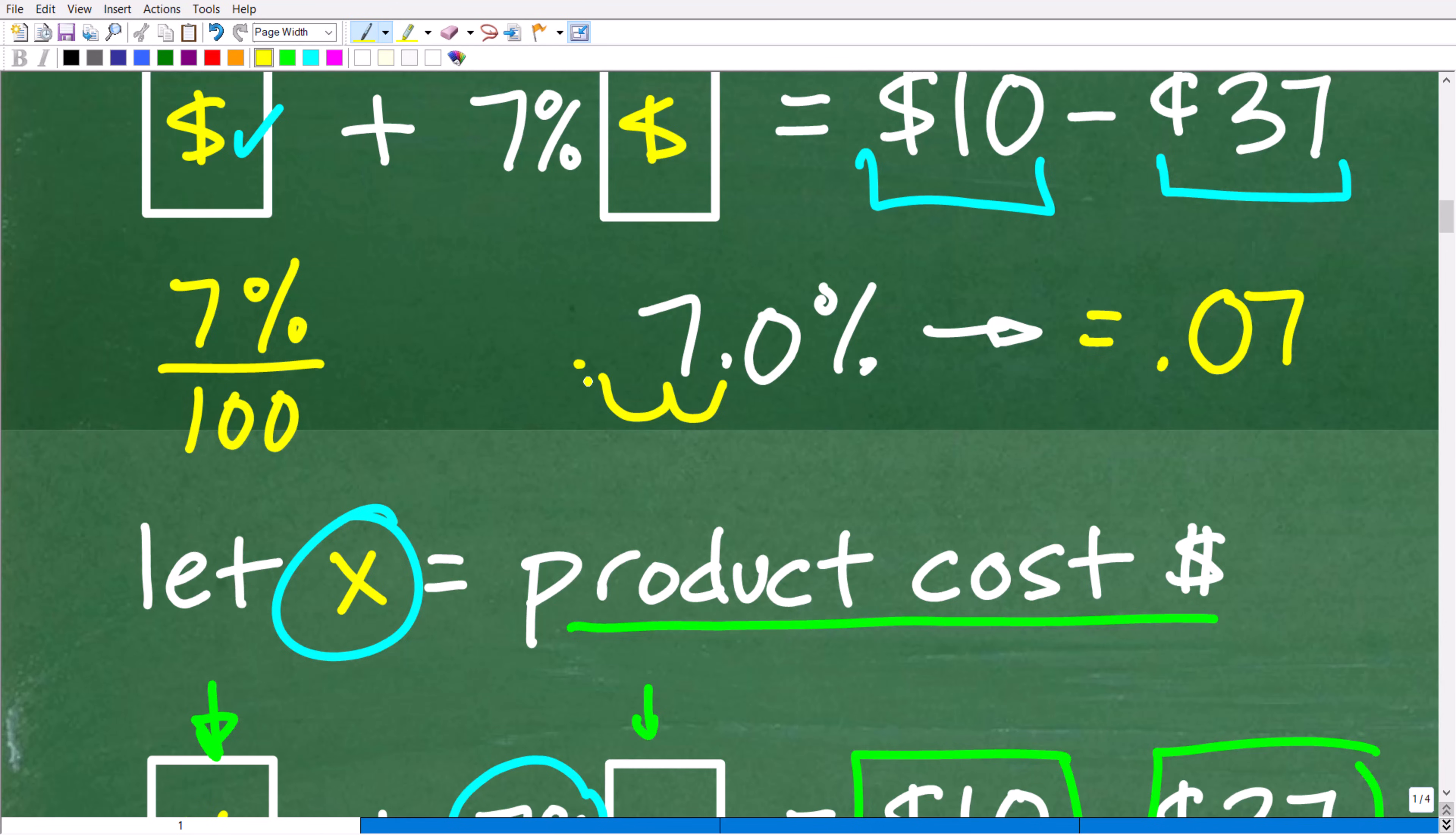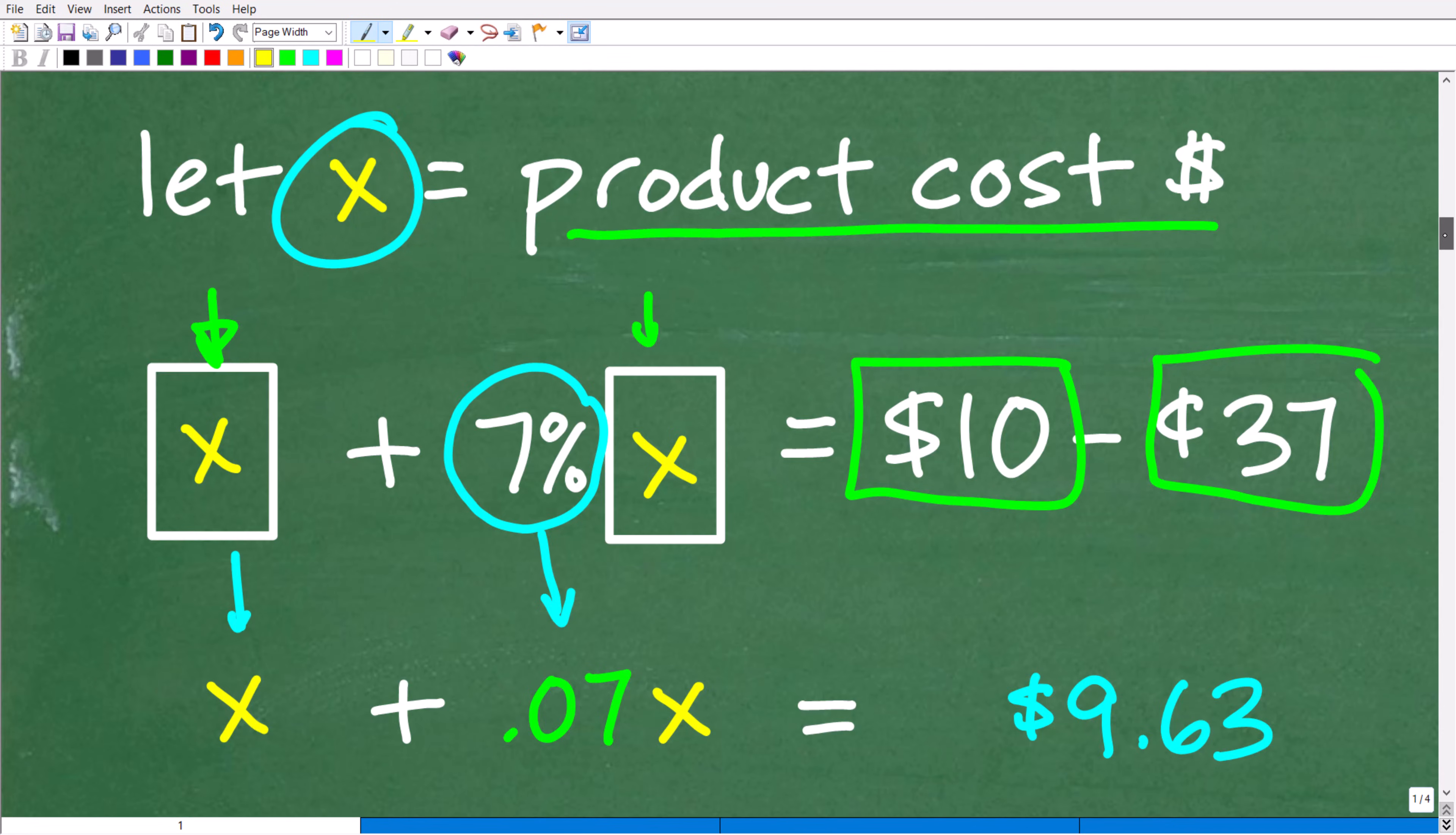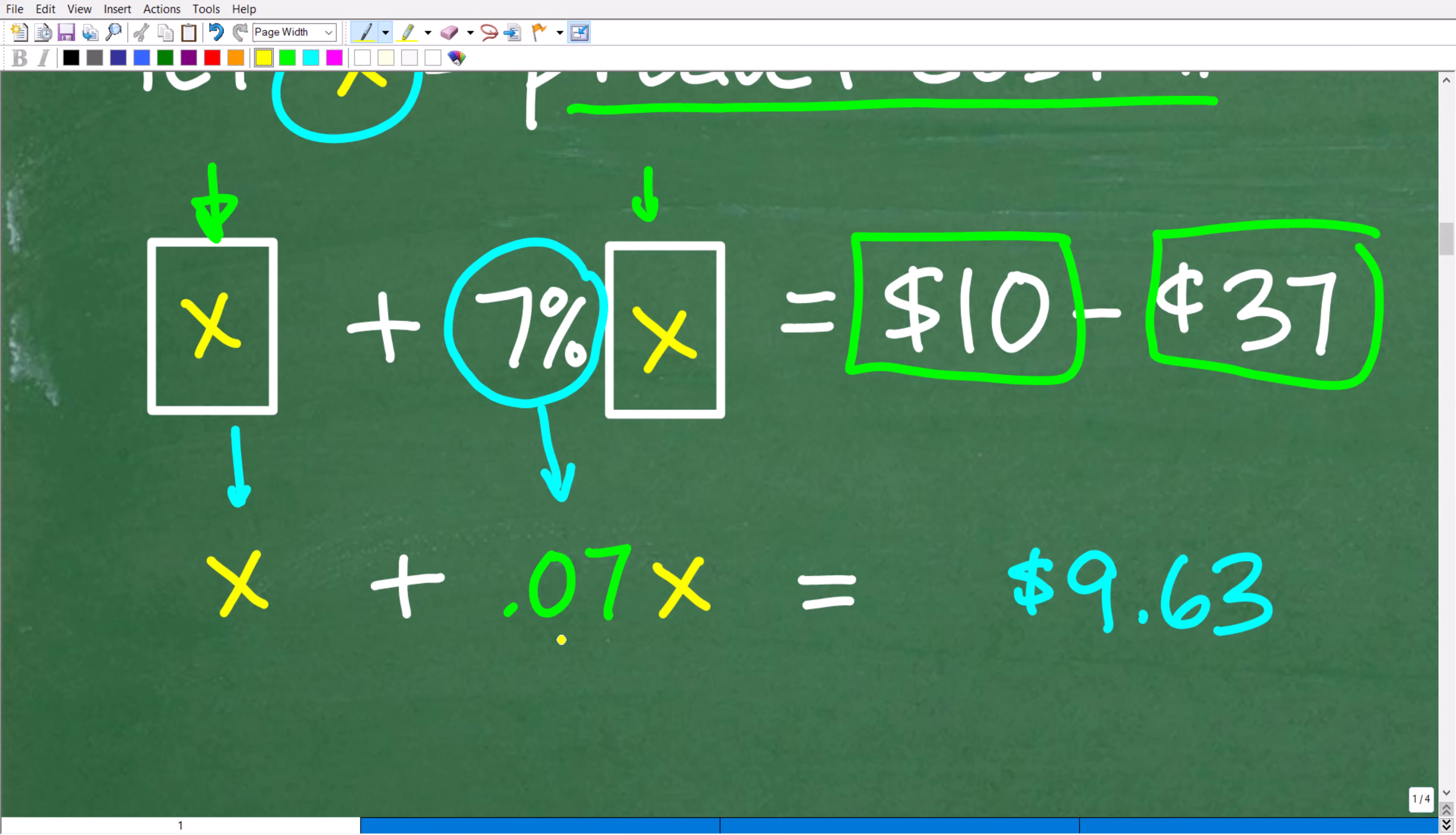But it's the same thing as dividing by 100. So technically, you're dividing the percent by 100. But effectively, what you're doing is moving the decimal point over two places to the left. So that's what we need to do.